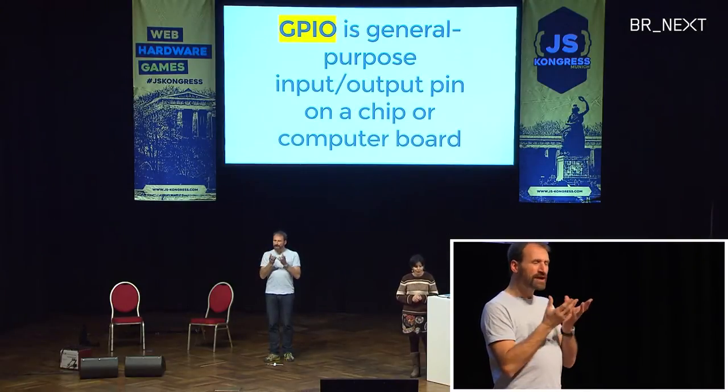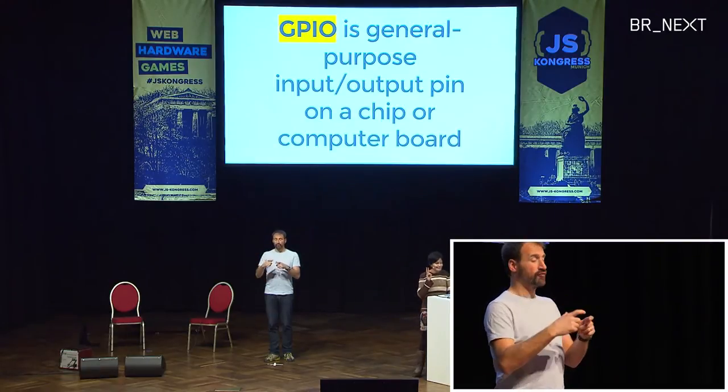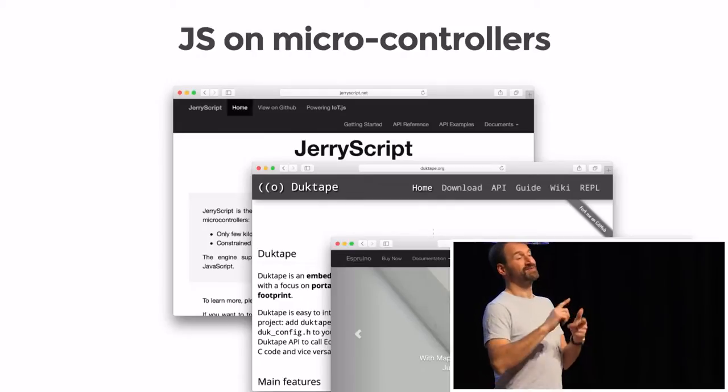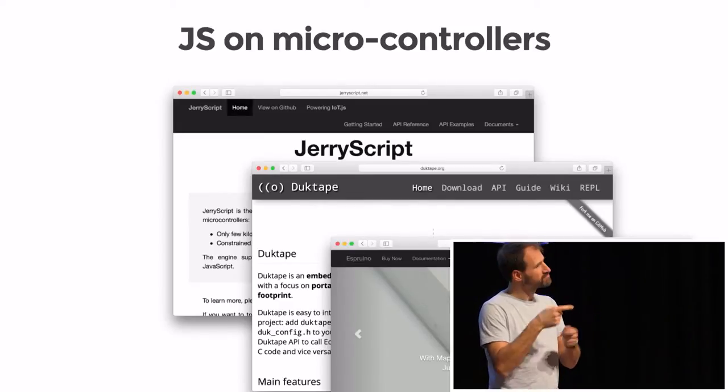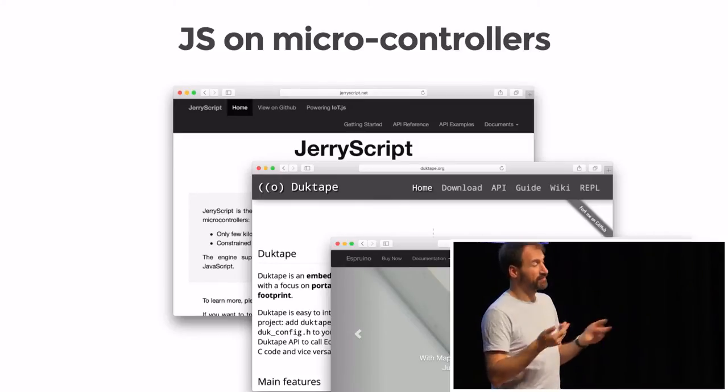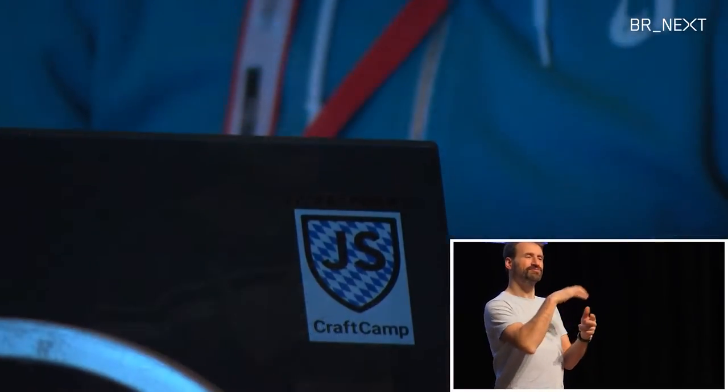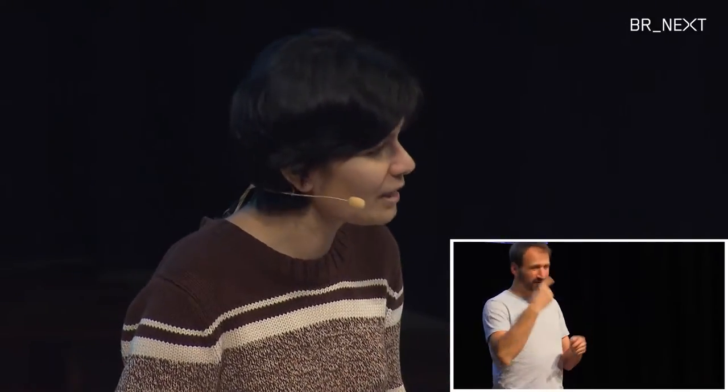GPIO stands for general-purpose input-output pin on a chip or computer board. The second type of hardware for JavaScript is microcontrollers. Microcontrollers do not run an operating system — they are single-threaded. There are three JavaScript engines that can run on microcontrollers: Node uses V8, and there are also JerryScript, Duktape, and Espruino, which are different JavaScript engines designed for microcontrollers.